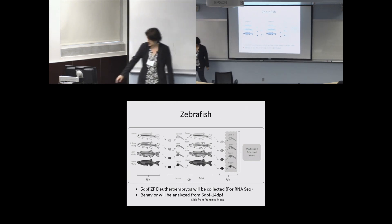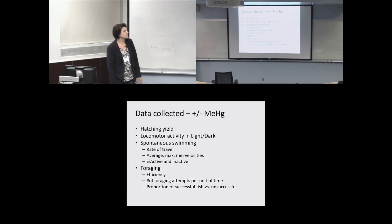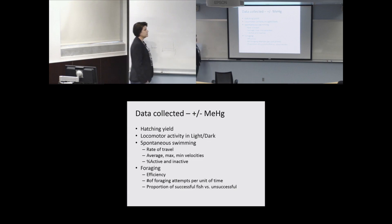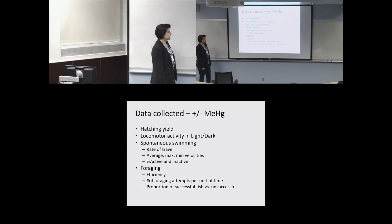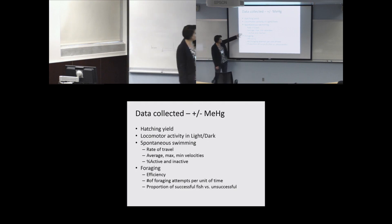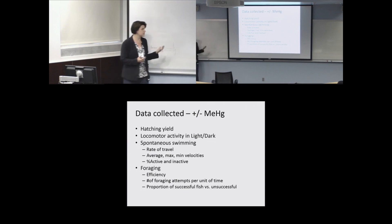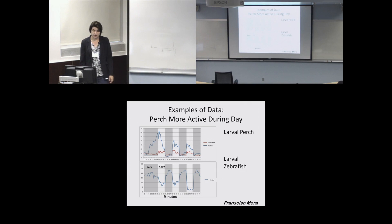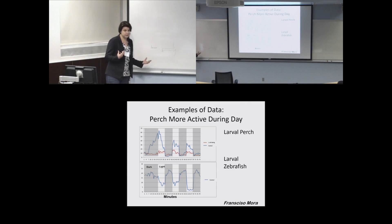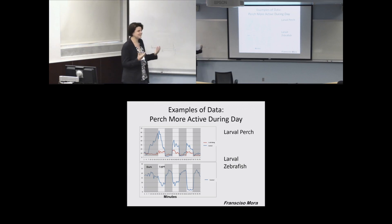He collected things like hatching yield, locomotor activity, light and dark assays used by some regulatory agencies, spontaneous swimming, rate of travel, average, max, and min velocities, percent active and inactive, foraging efficiency, number of foraging attempts per unit of time, and proportion of successful versus unsuccessful fish. What's really interesting is that we thought zebrafish could inform the perch, but we find that at the behavior level they do completely different things.